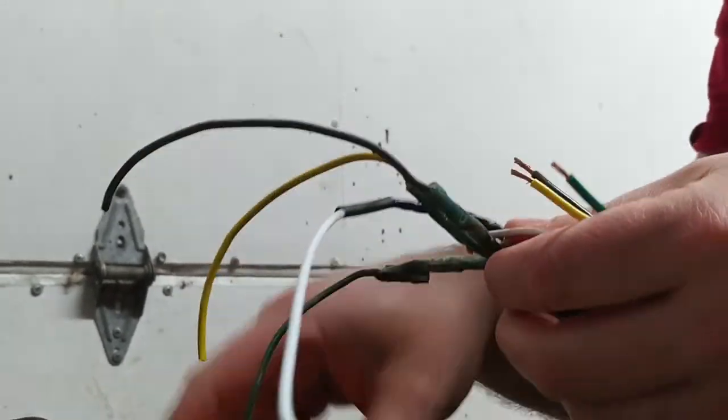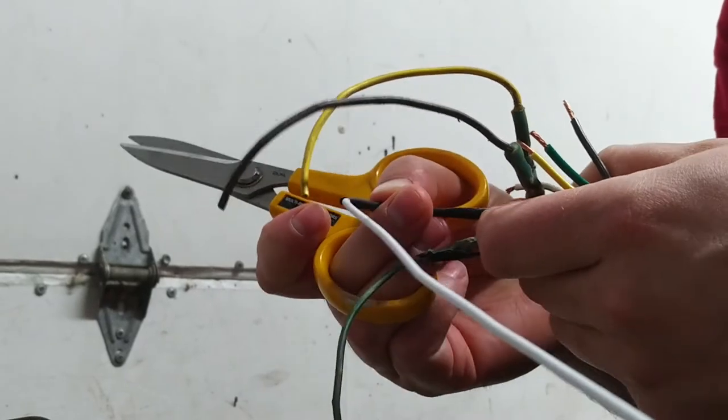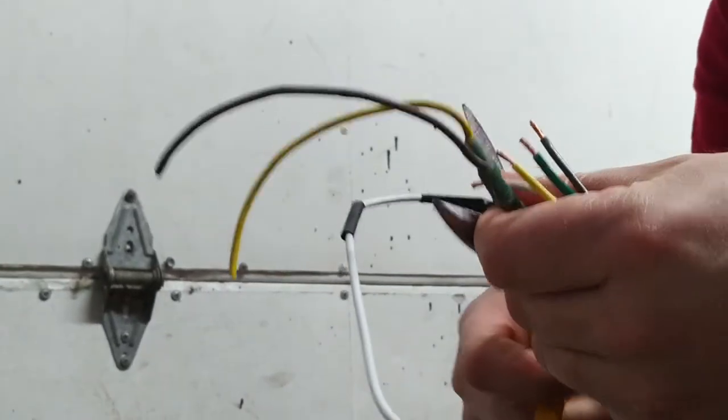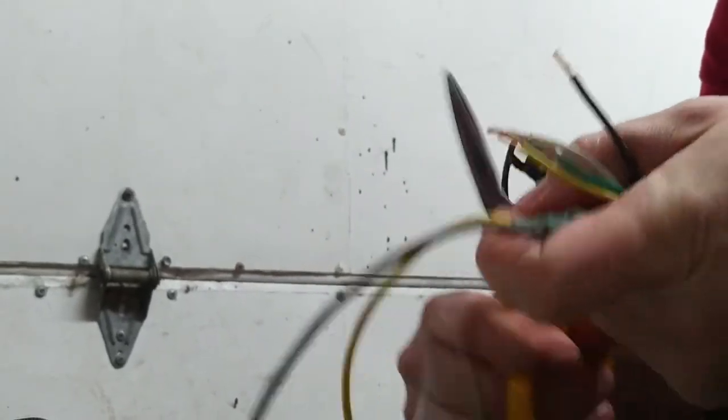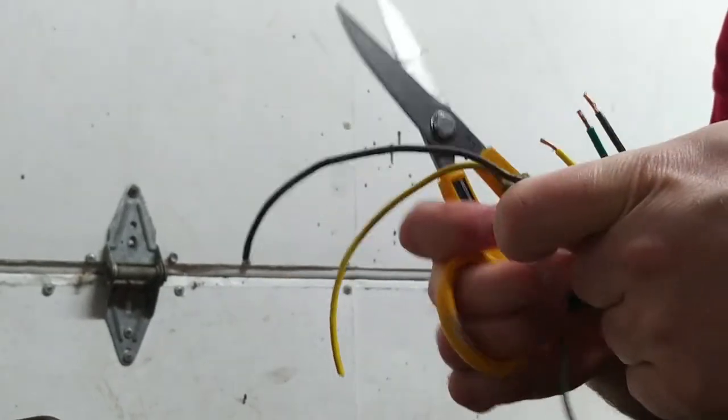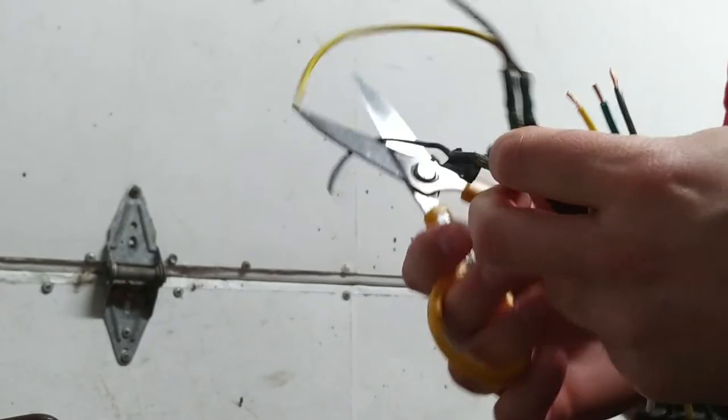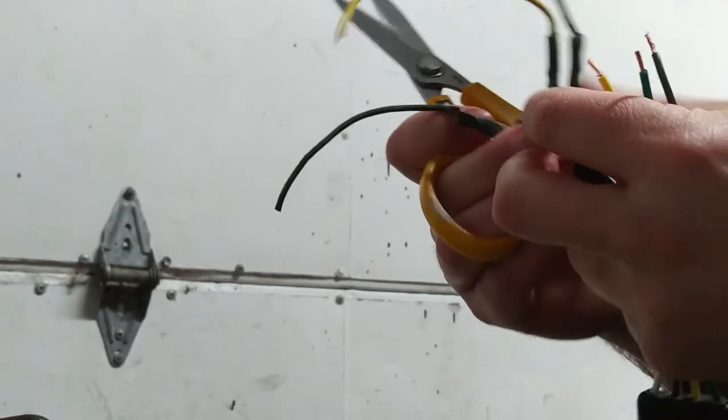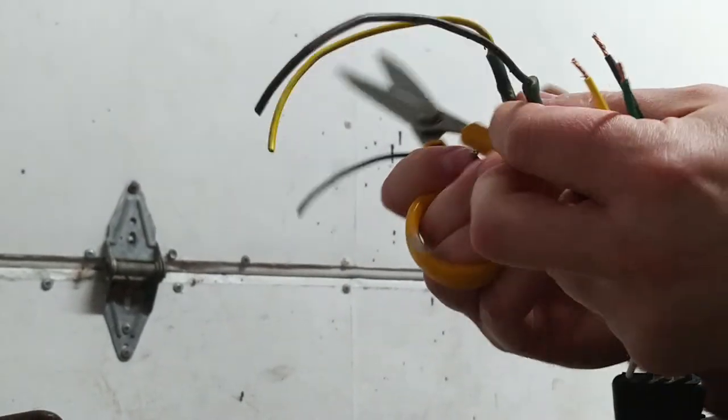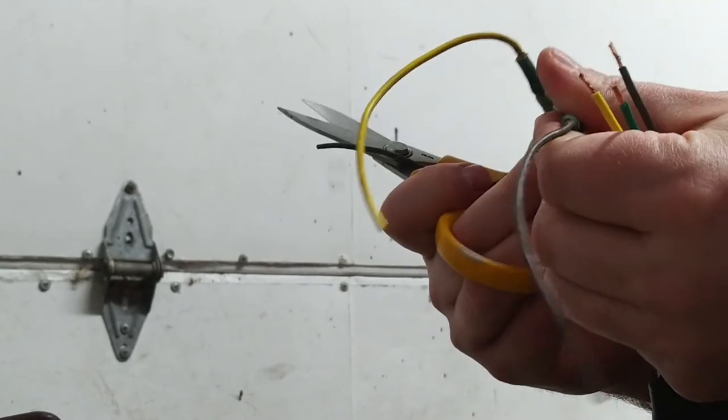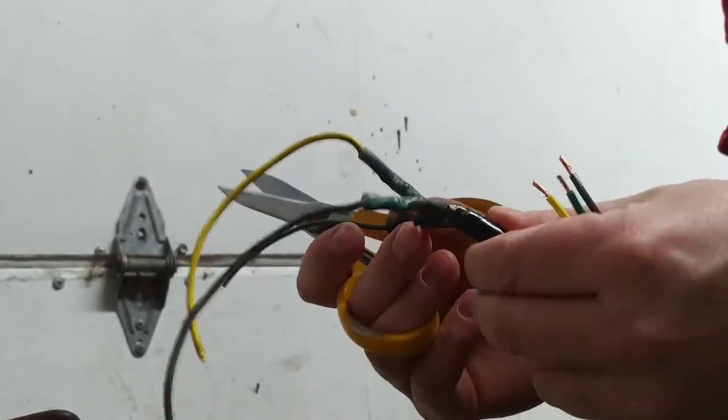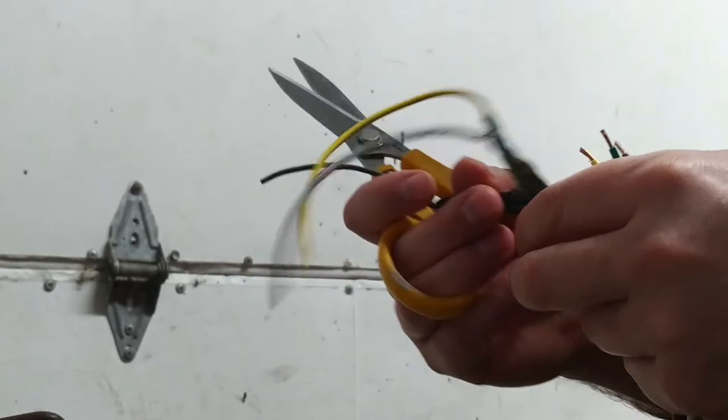Sometimes when you do these wiring harnesses, they might not be color coded like that. So you'll have to manually figure out what's what. In this case, green is green, yellow is yellow, and brown is brown. You can't make it any easier than that, of course.